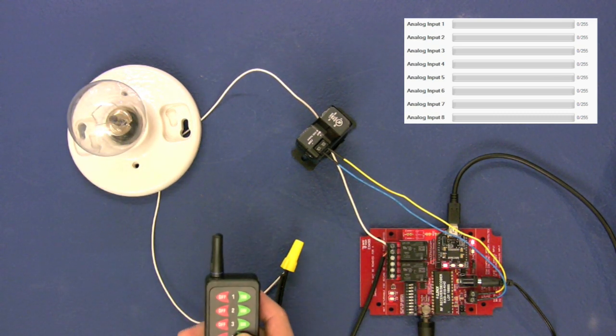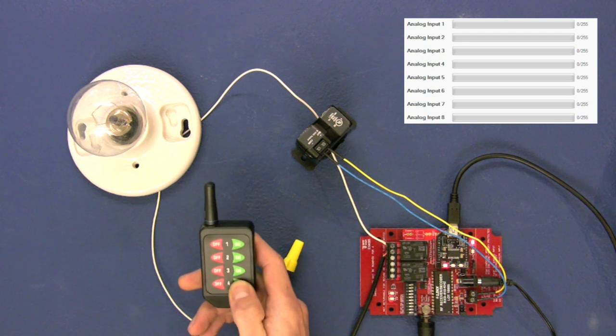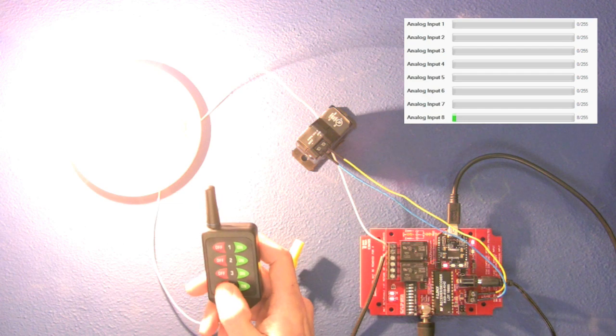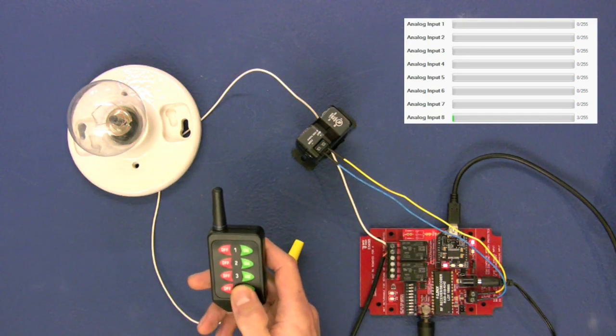Now we'll turn on the light bulb. Keep an eye on analog input 8 in the window. When the light bulb is turned on, you'll see analog input 8 reads all the way up to about 8.